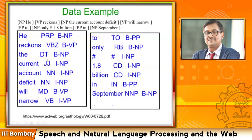Narrow is a verb here (though it can also be an adjective), to is a preposition, only is an adverb, hash is a symbol, 1.8 and billion are cardinal numbers, in is a preposition, September is a proper noun, and the full stop is the sentence finisher. After POS tagging, chunk tags are assigned — a much simpler situation that only groups words which belong in the same group. He is B — a lone member of its own chunk. Records is also B.